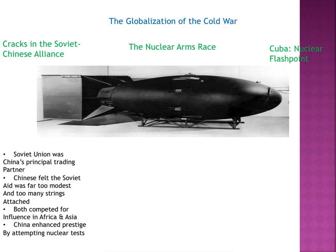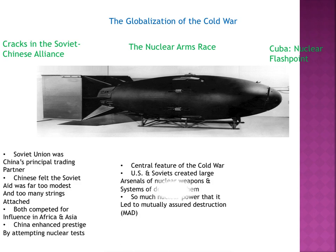The globalization of the Cold War — cracks in the Soviet-Chinese alliance. The Chinese were getting tired of feeling the Soviets weren't really helping them — the aid was far too modest and too many strings were attached. Both competed for influence in Africa and Asia, and China enhanced its prestige by conducting its own nuclear tests. This led into the nuclear arms race, a central feature of the Cold War. The U.S. and Soviets created large arsenals of nuclear weapons and systems for deploying them — just seeing this arms race build.